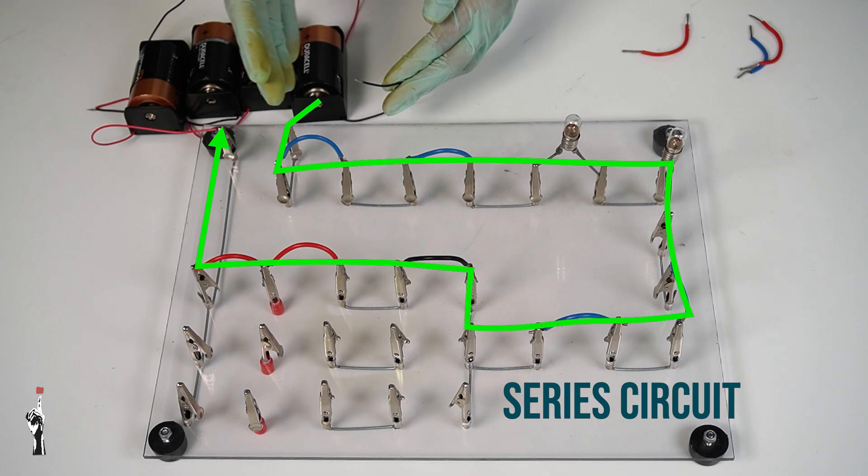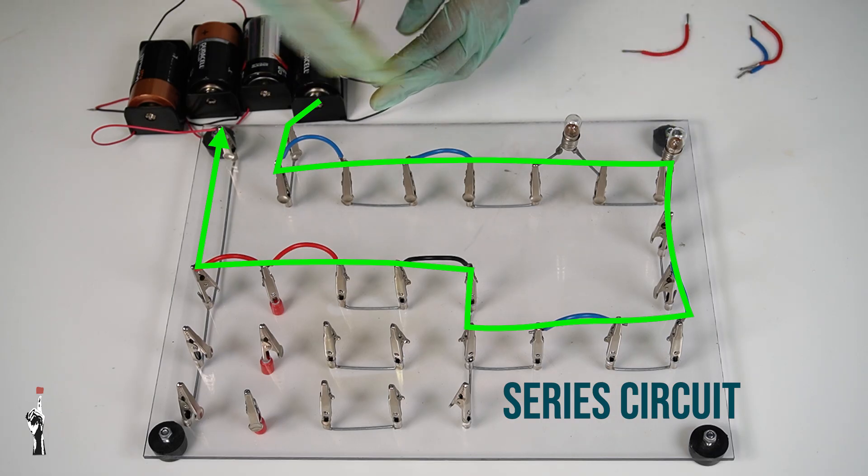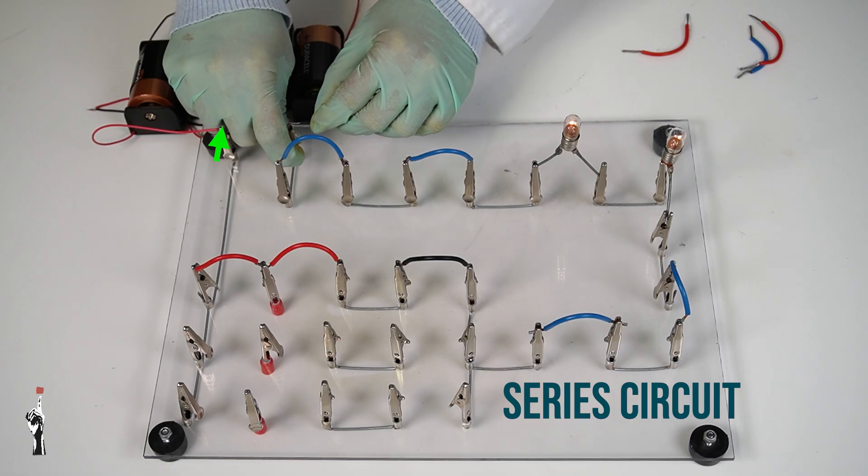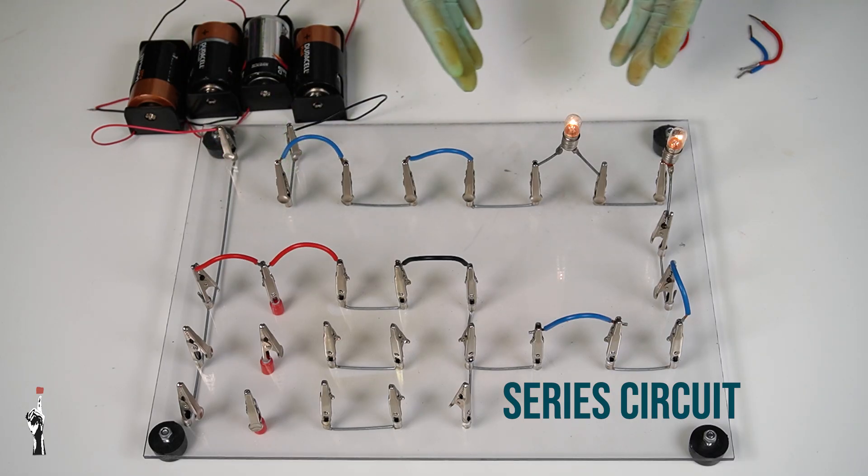So, the current never splits and the same current goes through both of the bulbs. They're in the same branch. So, if I close the circuit, we're going to see that the two light bulbs, they burn, but they don't burn that brightly.